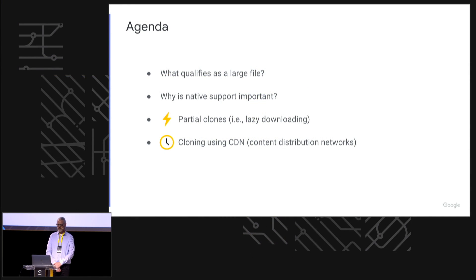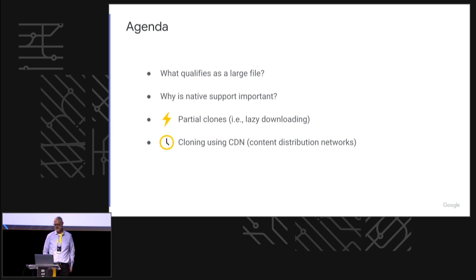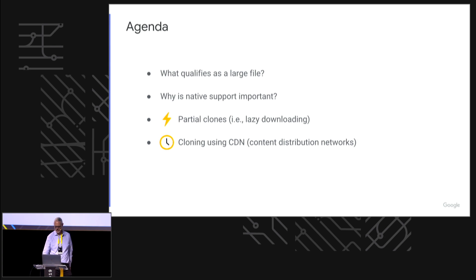So the agenda today is to define terms — what are we talking about with large files? Why do I consider native support for large files to be important? I'm going to talk about a couple of new features in Git that are emerging. The first one, partial clones, is an emerging feature just introduced in Git 2.17 or 2.18, introduced in April of last year. The second one is a work in progress — not out there anywhere yet — which is using content distribution networks for cloning.